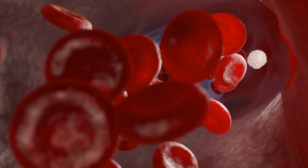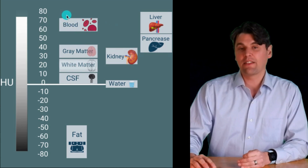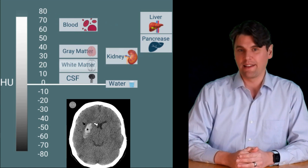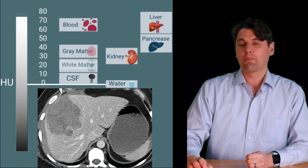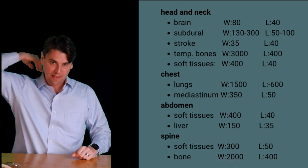An important point is that the same material may look different depending on the window width and level settings. If you're just starting out and you look at bleeding in an abdomen image versus a brain image, you might wonder why the blood looks different. In the brain, we're looking at a window width centered from roughly 0 to 80 Hounsfield units, so blood appears very bright at the upper end. In the abdomen with a wider window width and higher level, blood looks more muted and is not one of the brightest pixels.